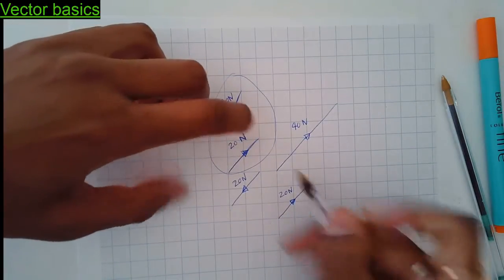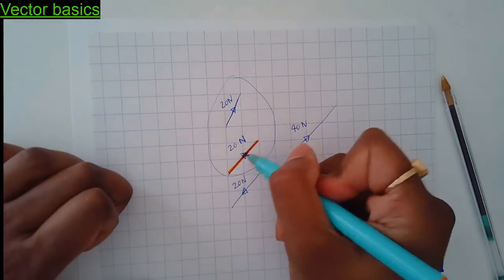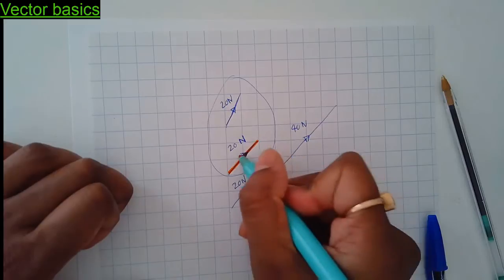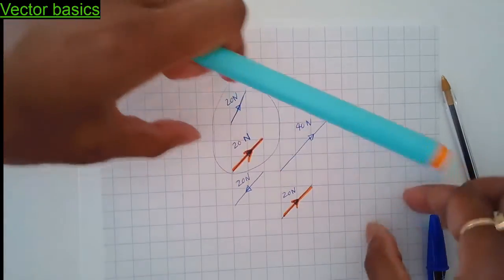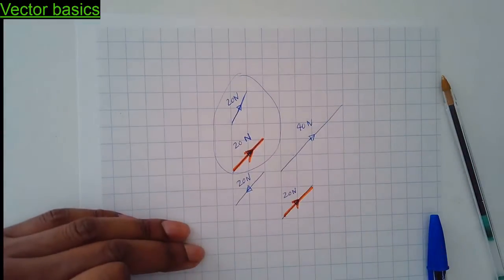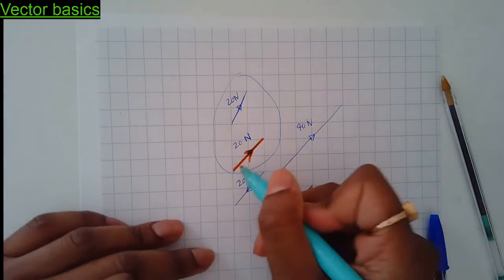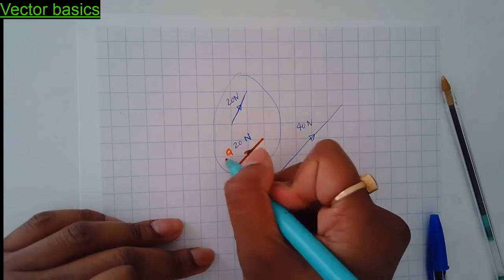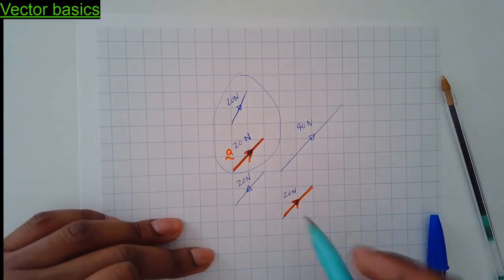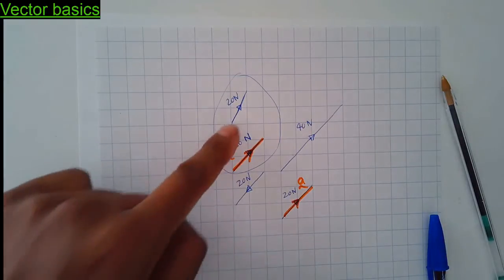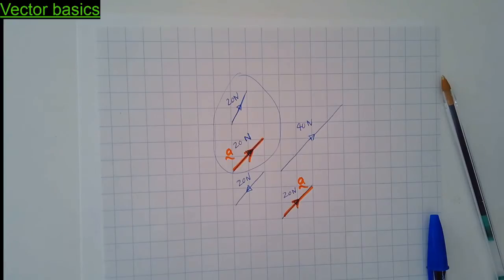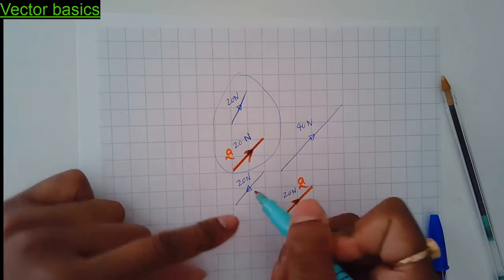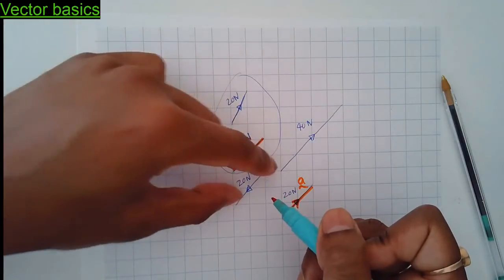The only two vectors that are matching are these two: same size, same direction — hence the same vector, even though they're drawn on different places of the page. I could represent this vector with a letter, like 'a', so the identical one would also be called 'a'. But that other one can't be called 'a' because it's not the same vector.